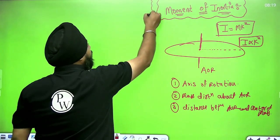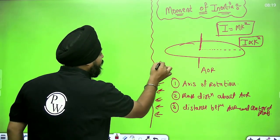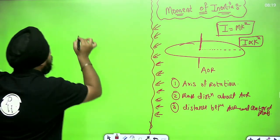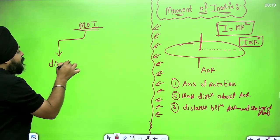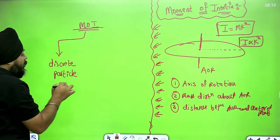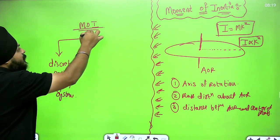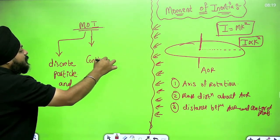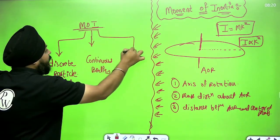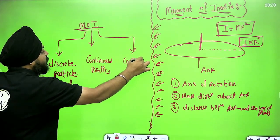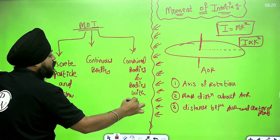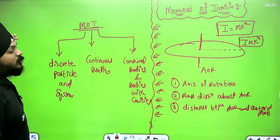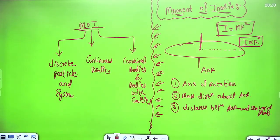The classification of moment of inertia: it is defined for discrete particles and their systems, for continuous bodies, and also for combined bodies and bodies with cavities — the same classification as for center of mass.